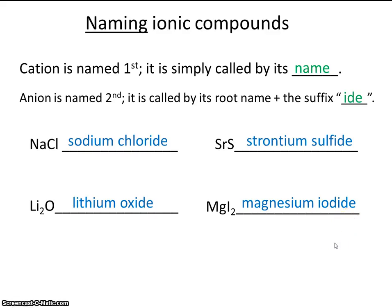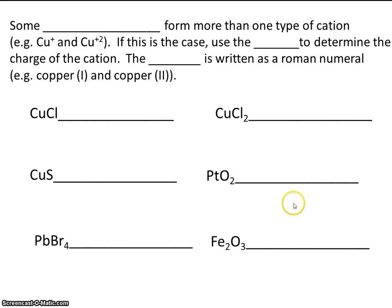So these were fairly straightforward. Let's try a little practice with some more challenging ones. Some transition metals, you remember that transition metals are the metals that appear in the middle of the periodic table, form more than one type of cation. For example, we have copper plus one, and copper plus two. If this is the case, we have to use the anion, remember that's the negative one, the one that's written second, to determine the charge of the cation. And then the charge is written as a Roman numeral. For example, copper one and copper two. So I've intentionally selected three words to underline here. Transition metals, ion, and charge. So take a little bit of time to read this again and understand what all of these things are.